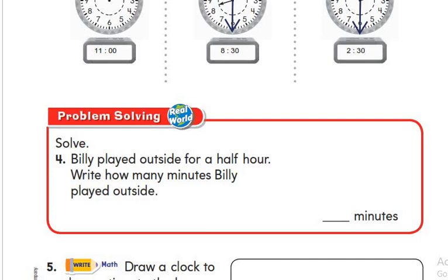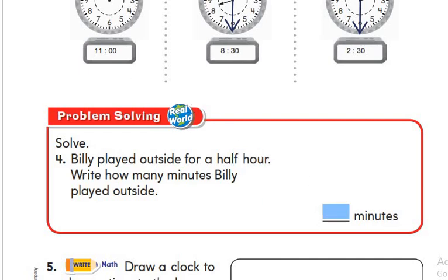Let's go to number 4. Beli played outside for a half hour. Write how many minutes Beli played outside. A half hour is 30 minutes.